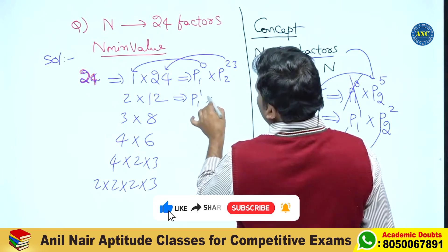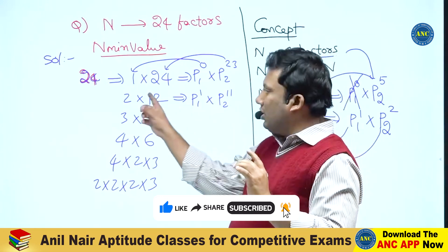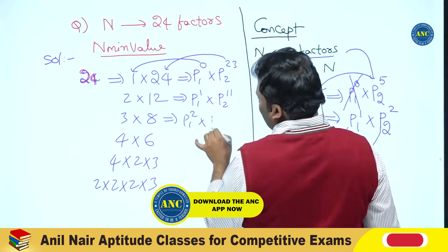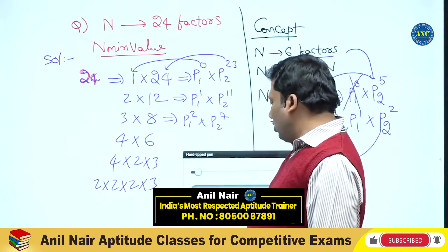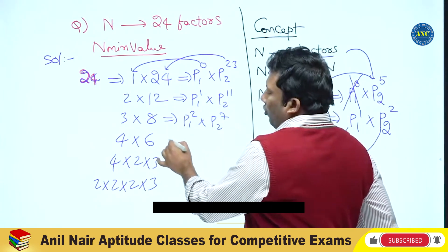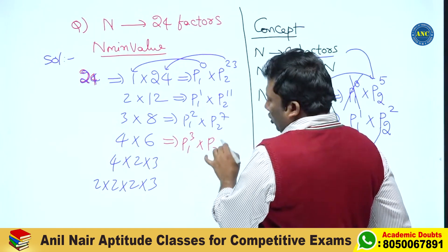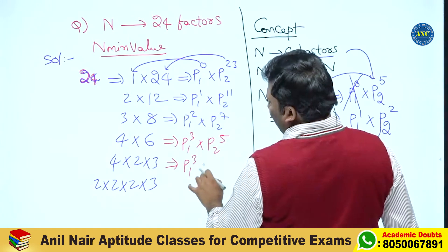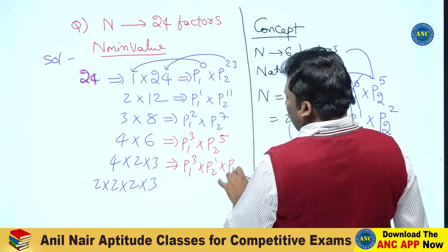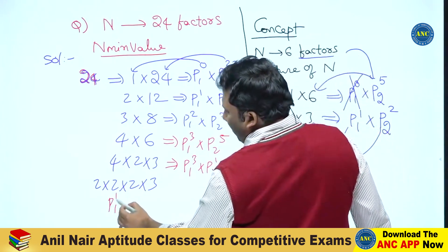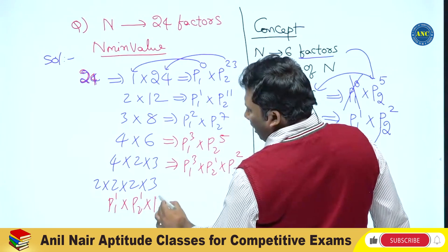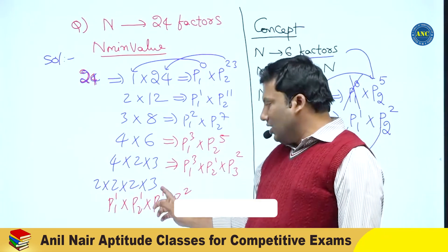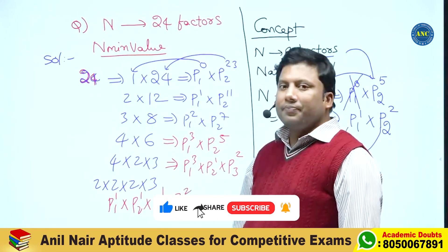It is p1 power 1 and p2 power 11 — zero to 1 is 2, zero to 11 is 12. For 3×8: p1 squared and p2 power 7. For 4×6: p1 cubed and p2 power 5. For 4×2×3: p1 cubed, p2 power 1, and p3 power 2. For 2×2×2×3: p1 power 1, p2 power 1, p3 power 1, and p4 power 2.